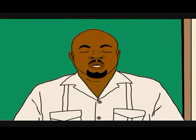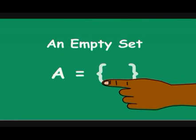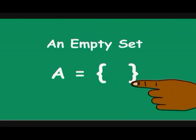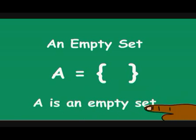We use capital letters to name a set. So, A equals, and you have curly brackets, really means that the set A is an empty set.